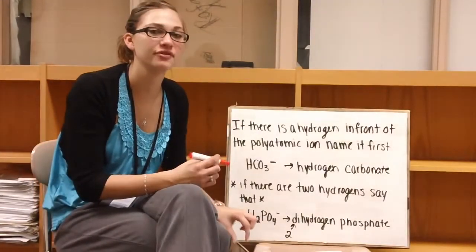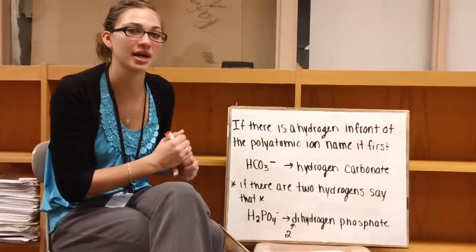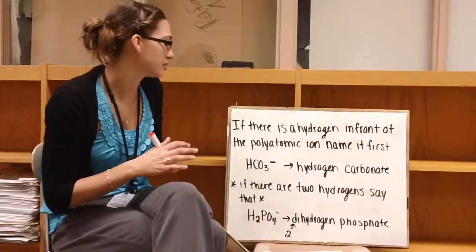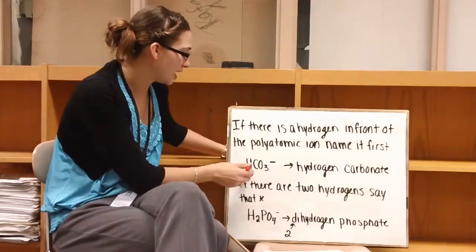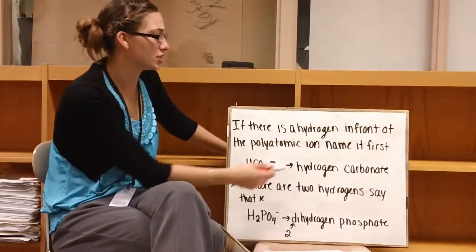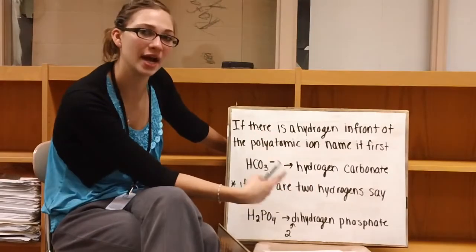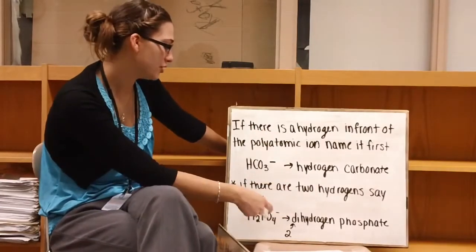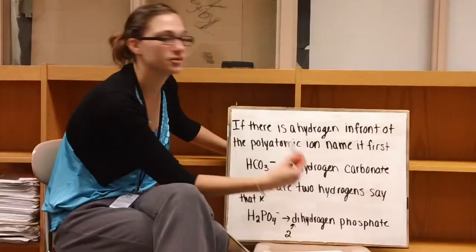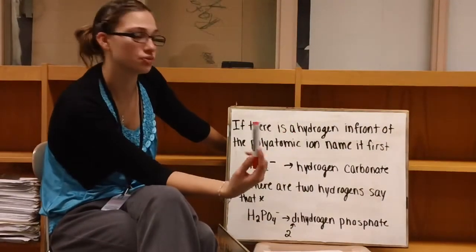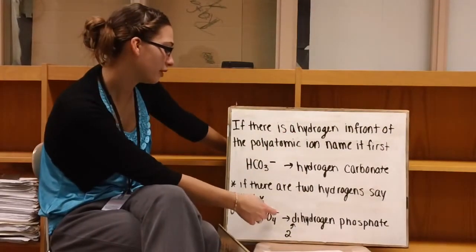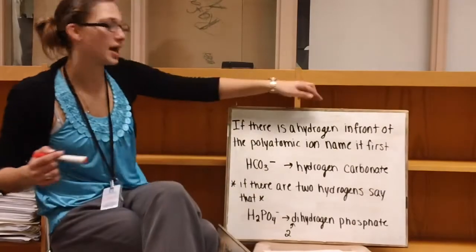So if there's a hydrogen in front of the polyatomic ion, you need to name that first. So an example would be HCO3-, which is hydrogen carbonate. You always want to name that hydrogen. If there's two hydrogens, you need to say that. And you can do that by saying di, so di means two. So H2PO4- would be dihydrogen phosphate.